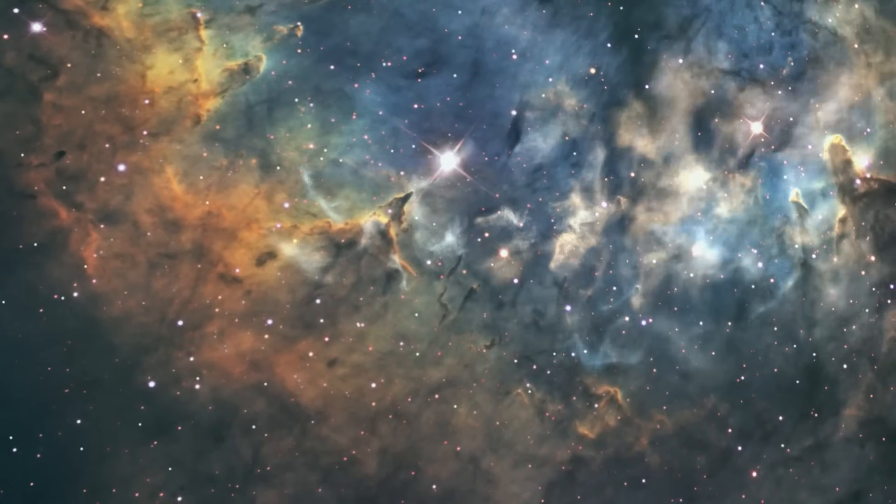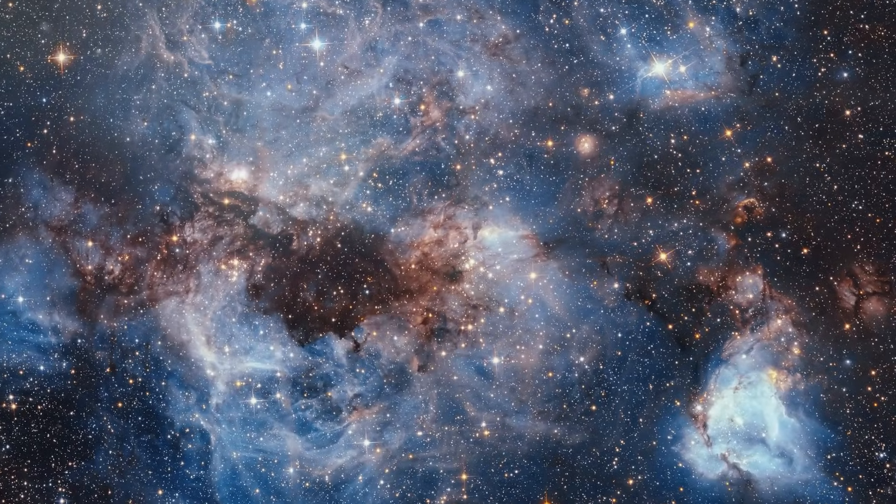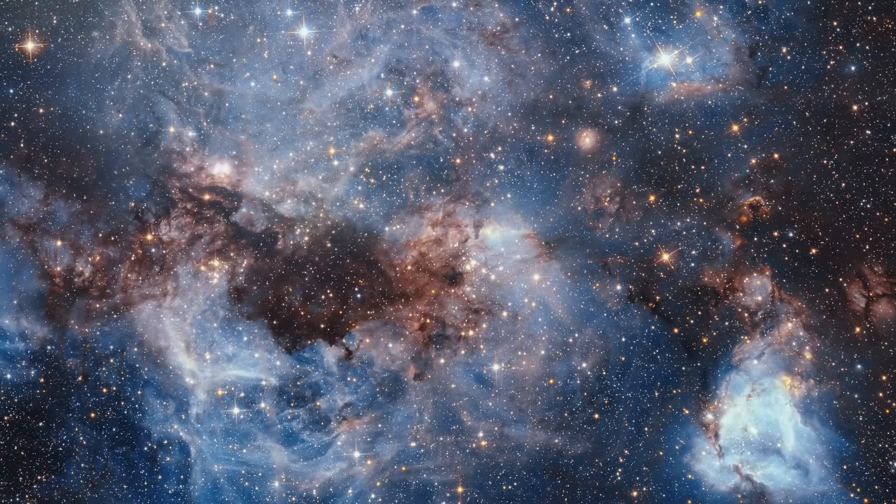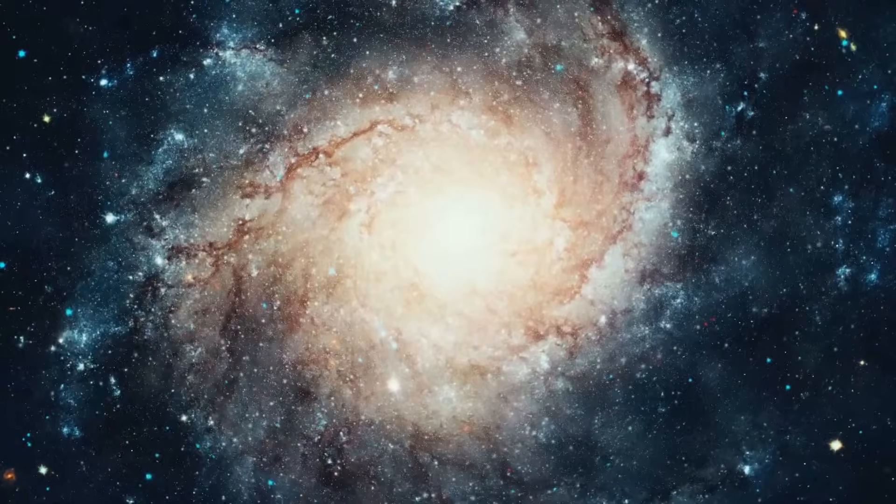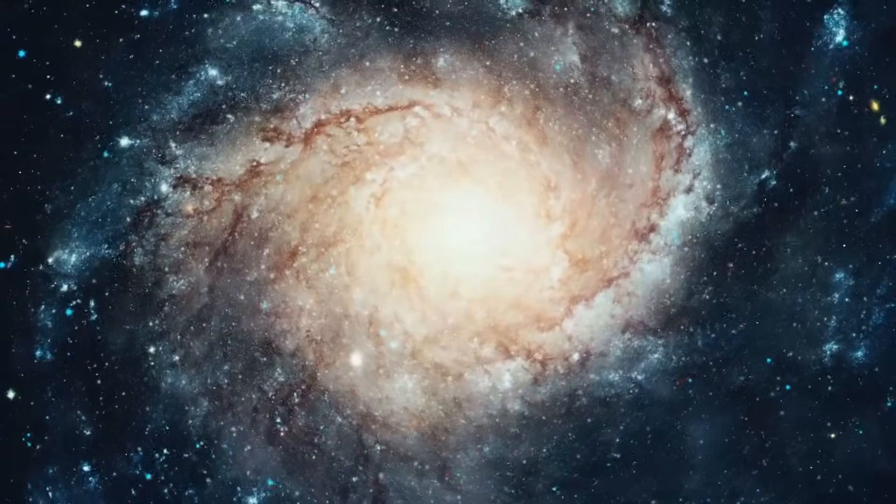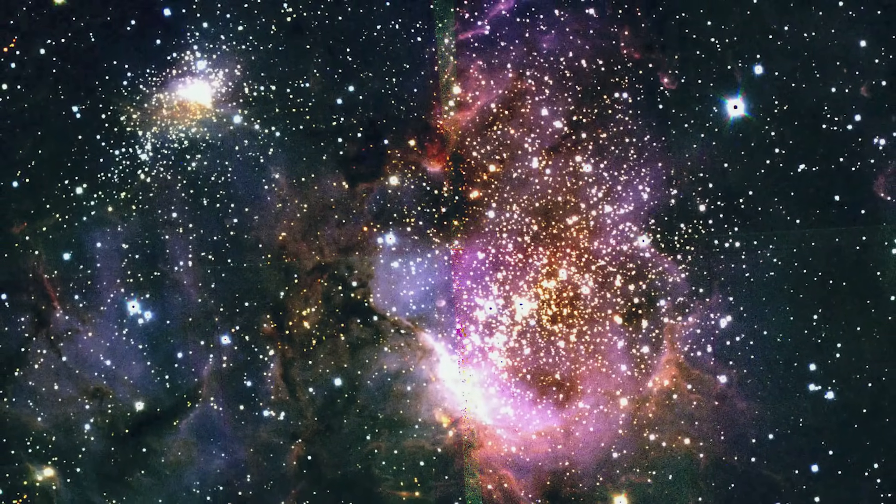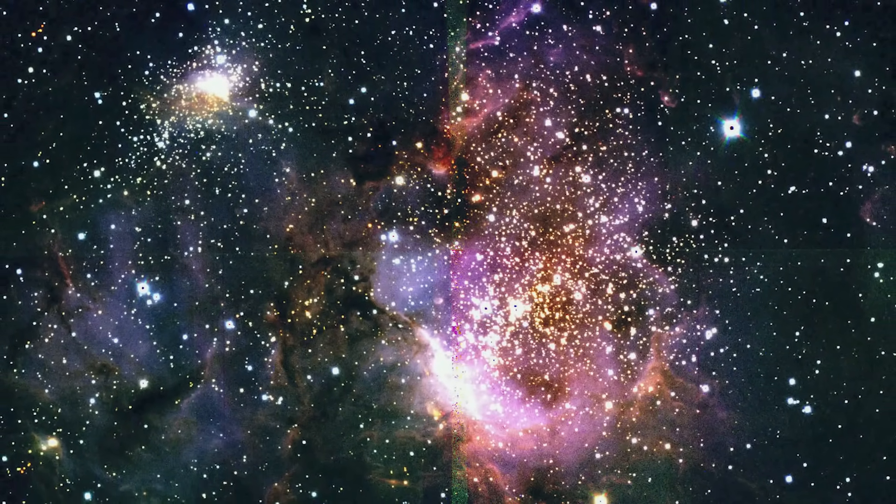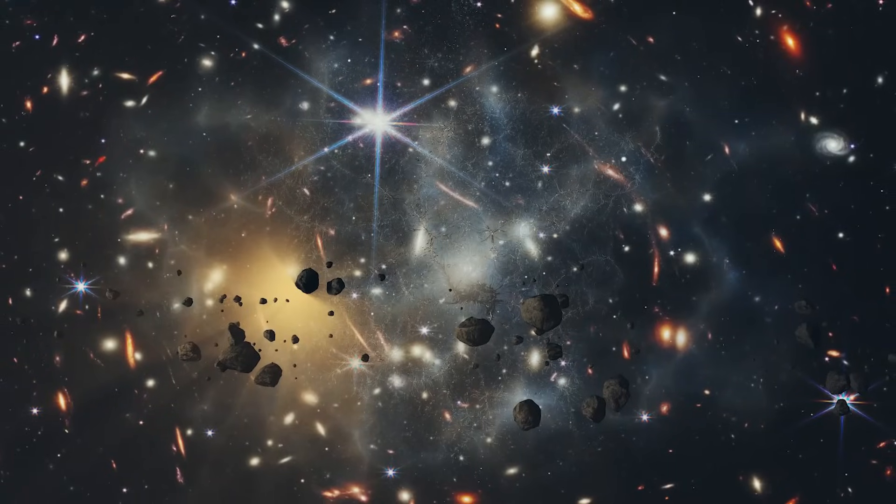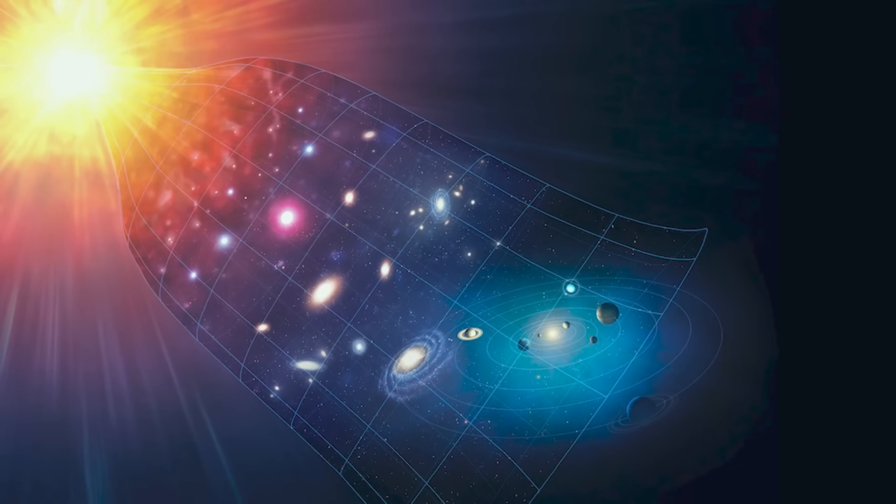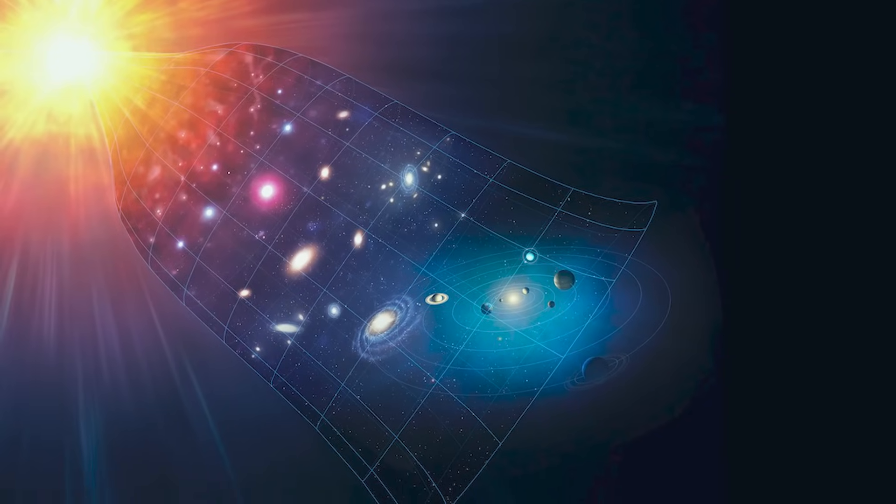This revelation is not just a mere data point. It's a testament to the dynamic and ever-evolving nature of the cosmos, a cosmos where our Milky Way, with its majestic spiral arms and stars orbiting a central bulge, has many more doppelgangers in the early universe than we ever fathomed. What could have led to this galactic abundance? And what does this mean for our understanding of the universe's evolution?